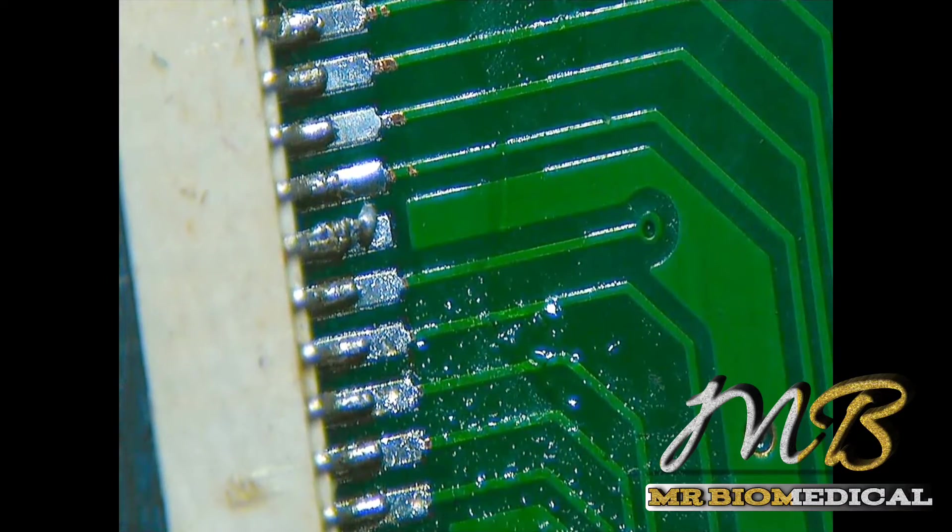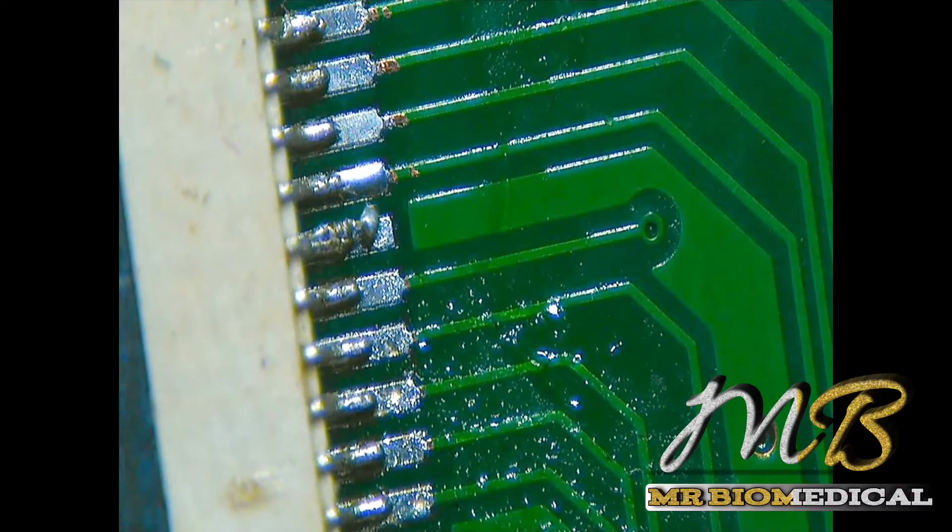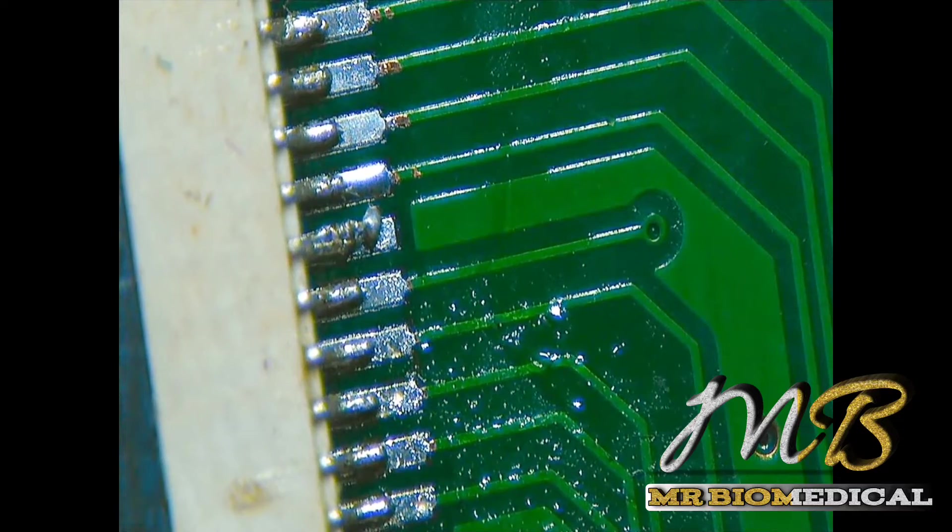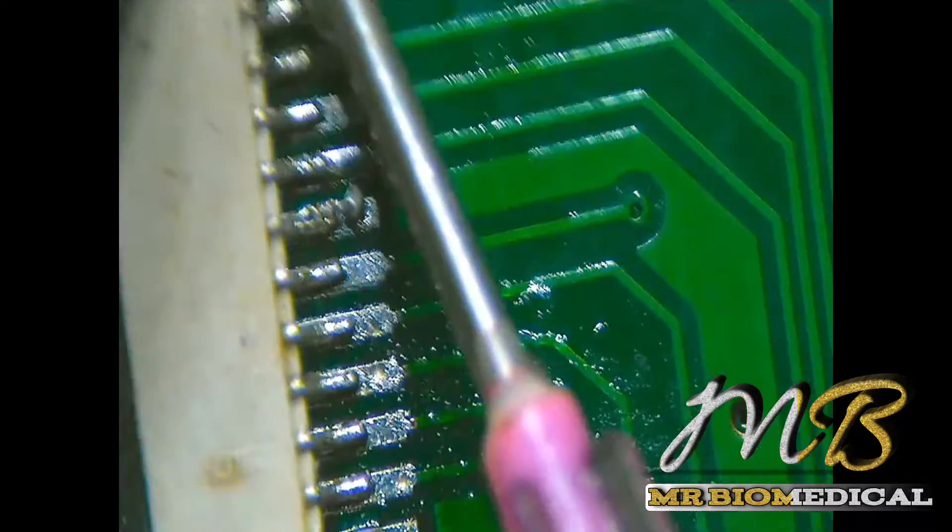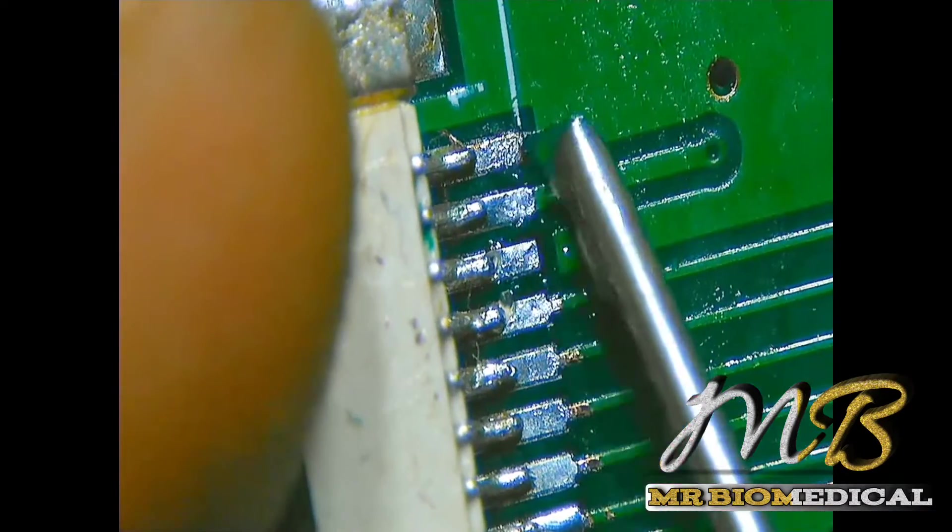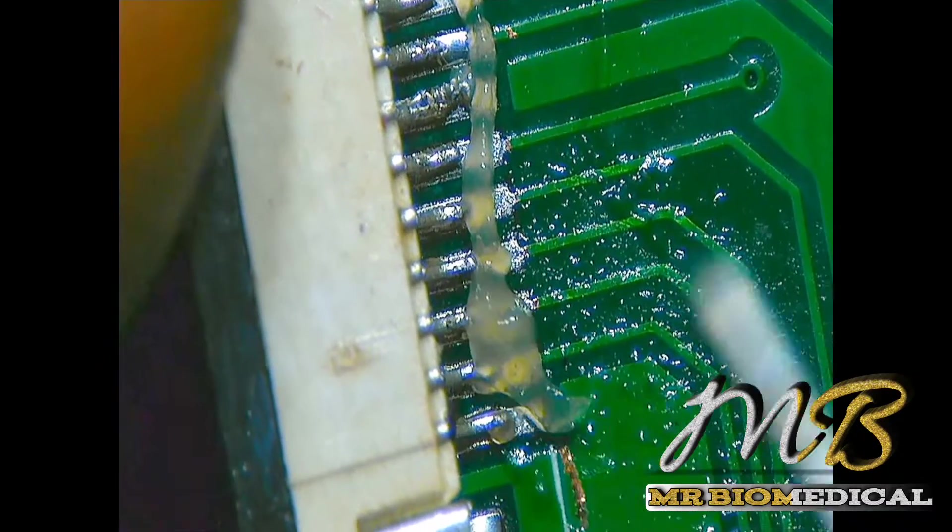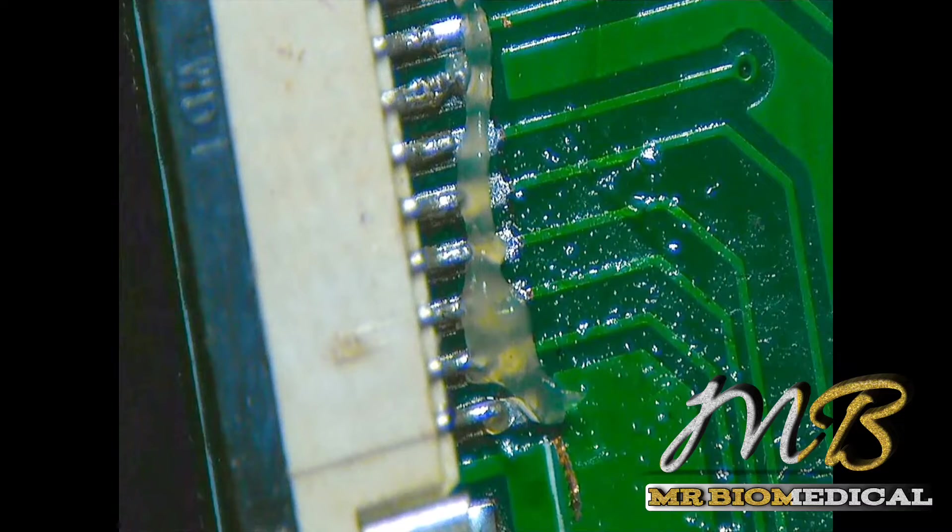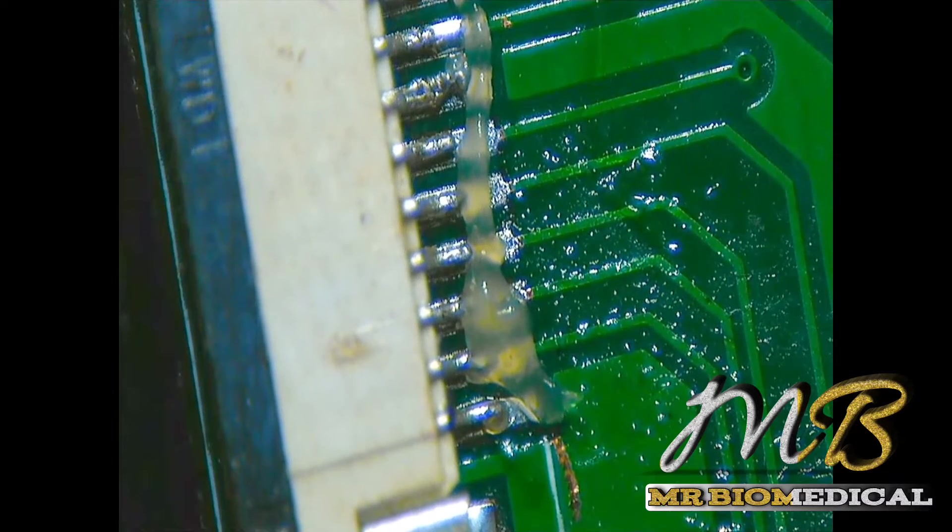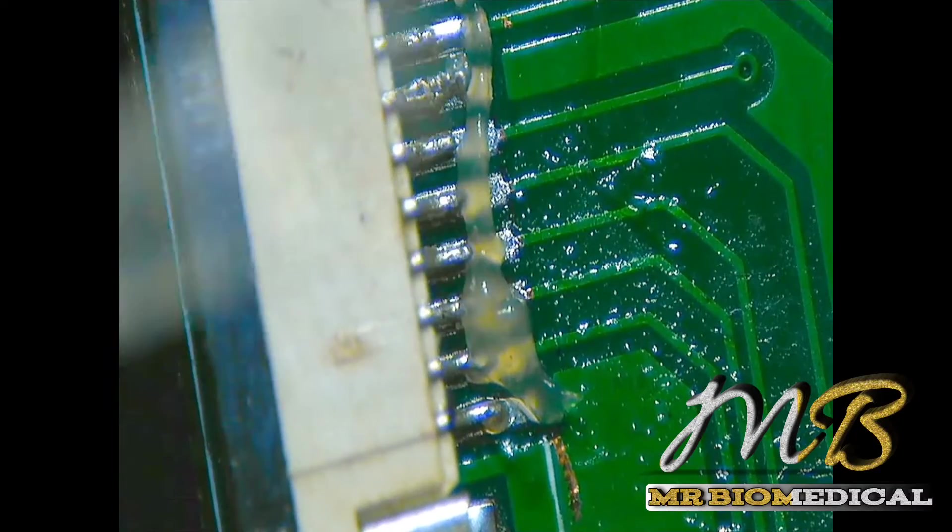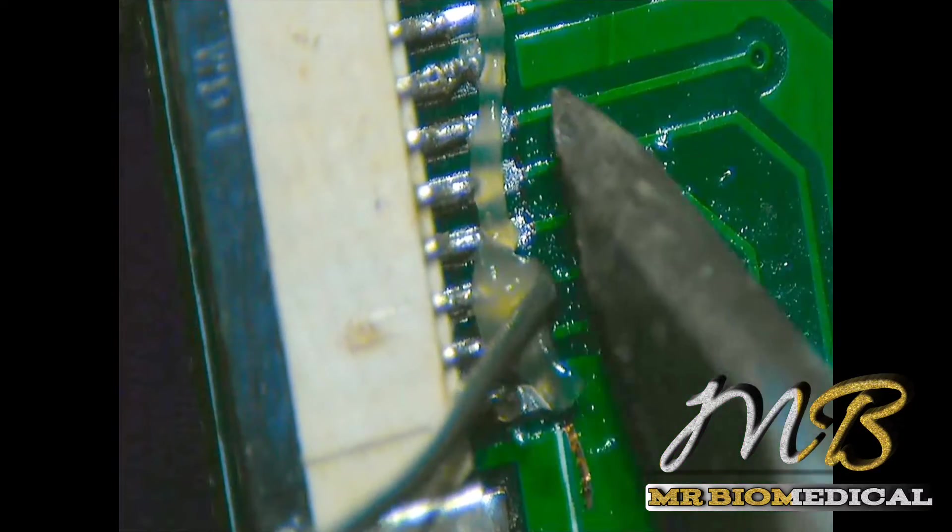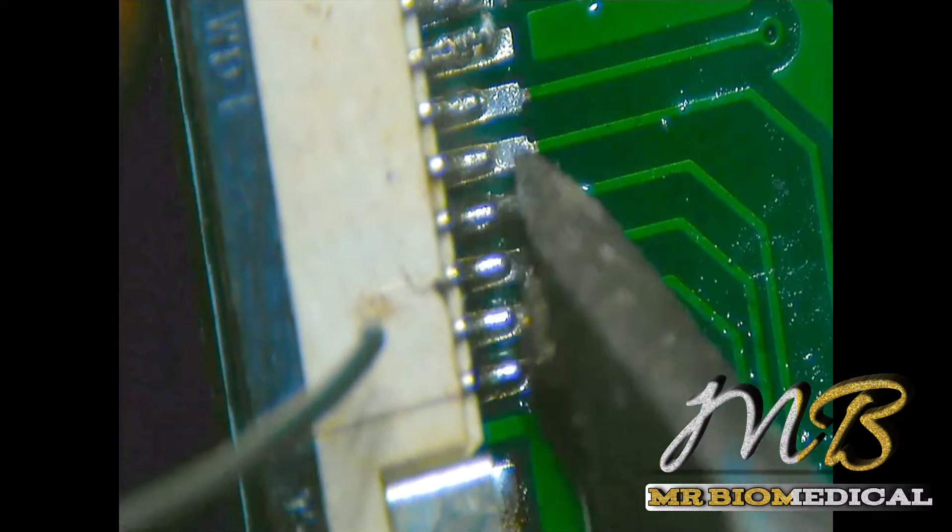So once it's settled our job is almost done. Now I'm applying the flux and then resolder with the soldering iron. That's it.